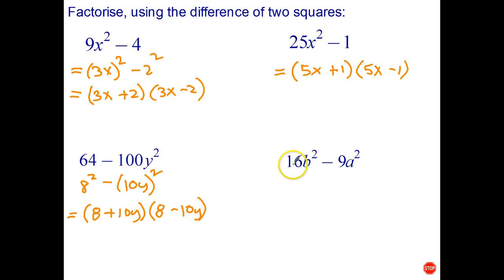And the last one, 16b² - well that's just (4b)². So that's going to be (4b +) and 9a² - well that's just (3a)². So (4b + 3a)(4b - 3a).